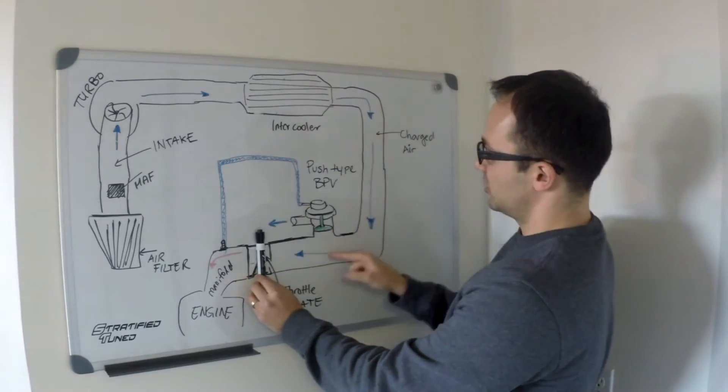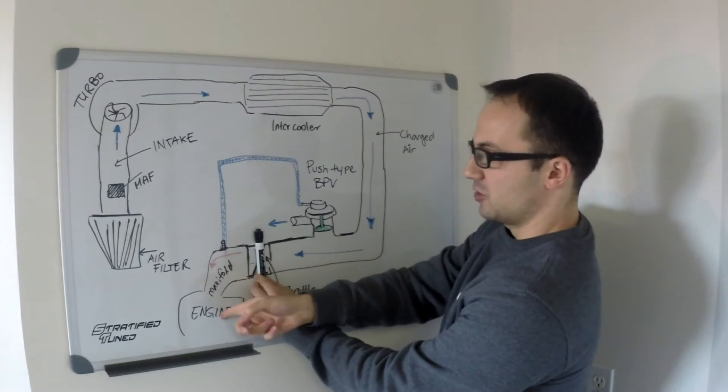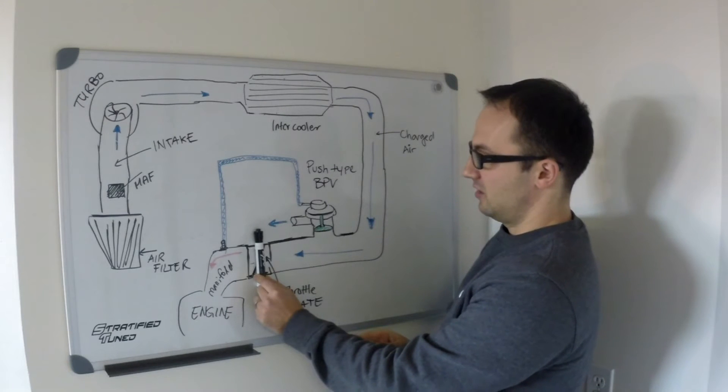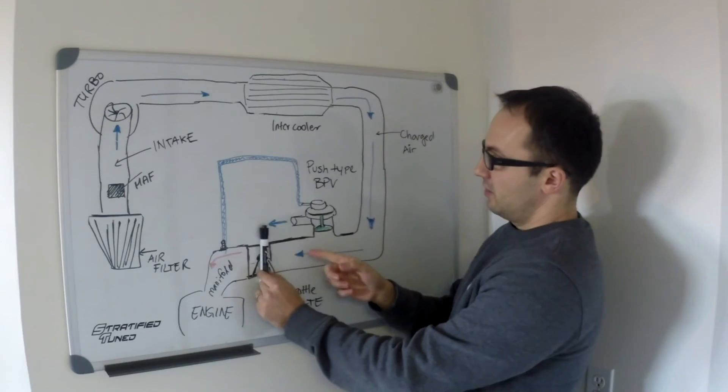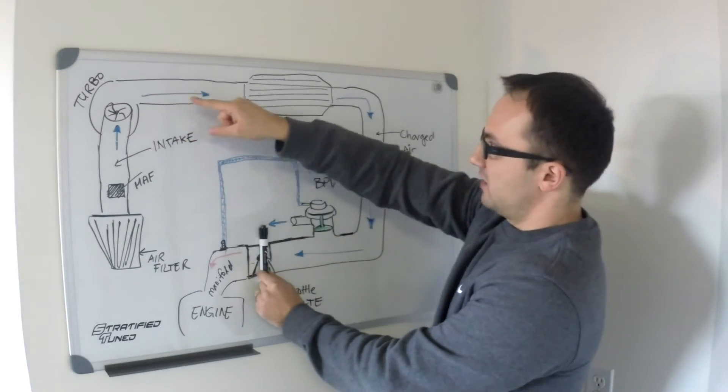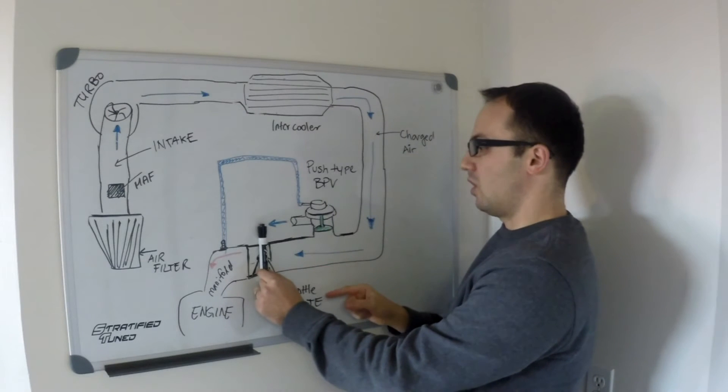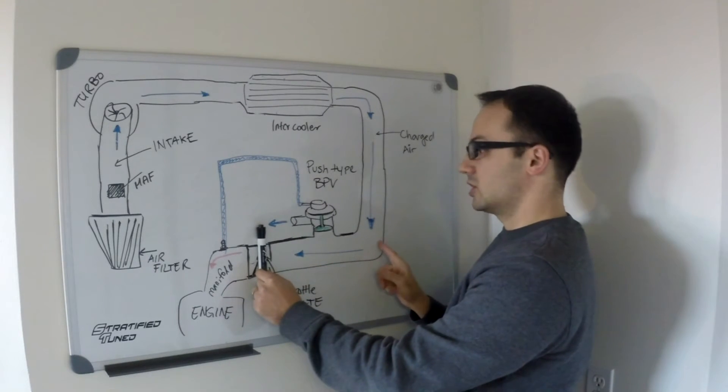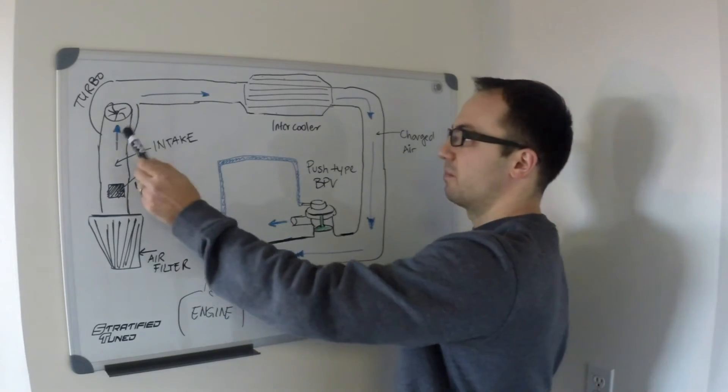Between this chamber—your charge piping and your turbocharger—and this chamber, which is your manifold and your engine. And the manifold gets pulled under vacuum. However, your turbocharger is still spinning and pushing air up against this closed wall. This creates a very large spike of pressure in your charge piping, and this is what causes compressor surge.